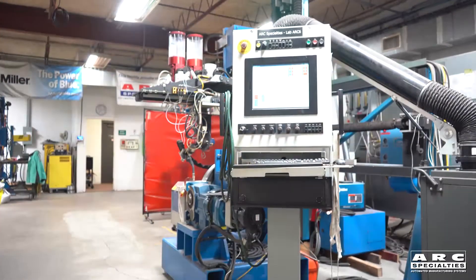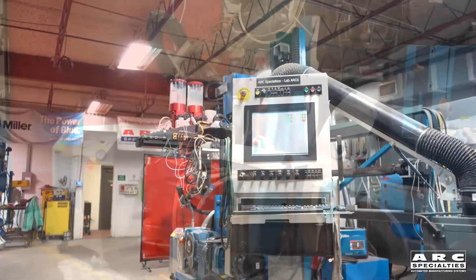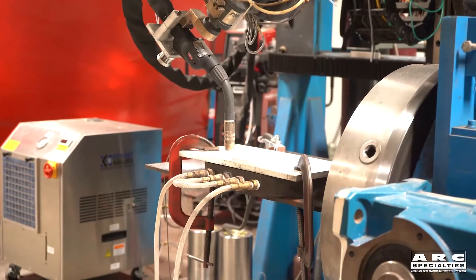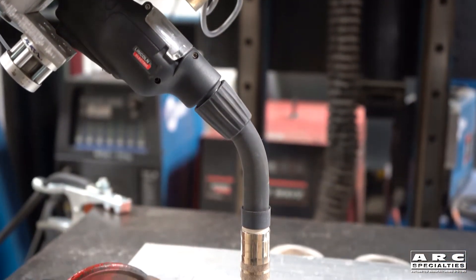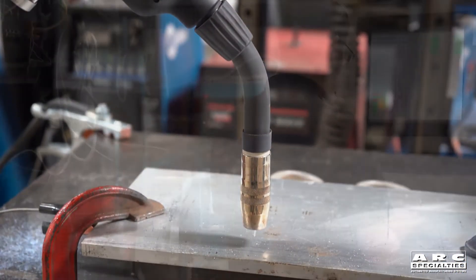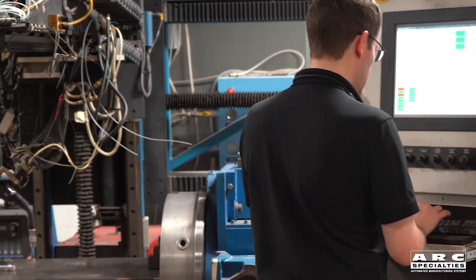The Arc 6 is our six-axis Delta Tau PMAC-based robot that we have in our laboratory. We have dozens of these running around the world, and this one we reconfigure for whatever process we're using. This time we configured it with a Lincoln R350 PowerWave power supply. We're running AC pulse.